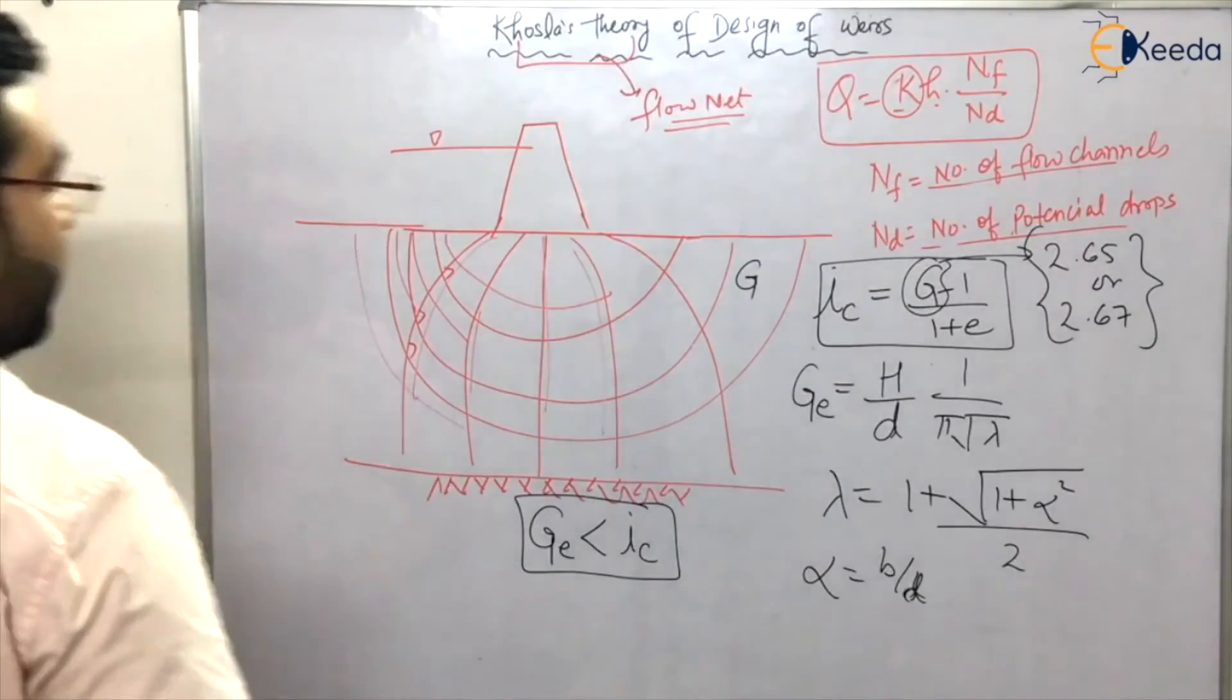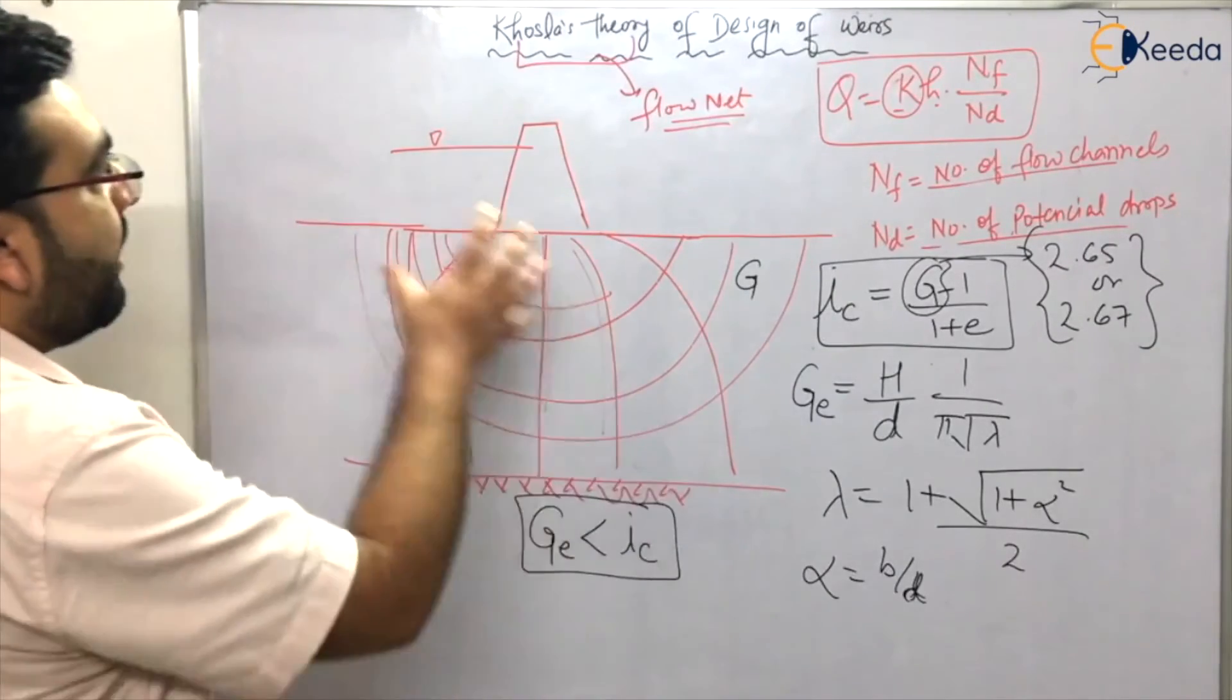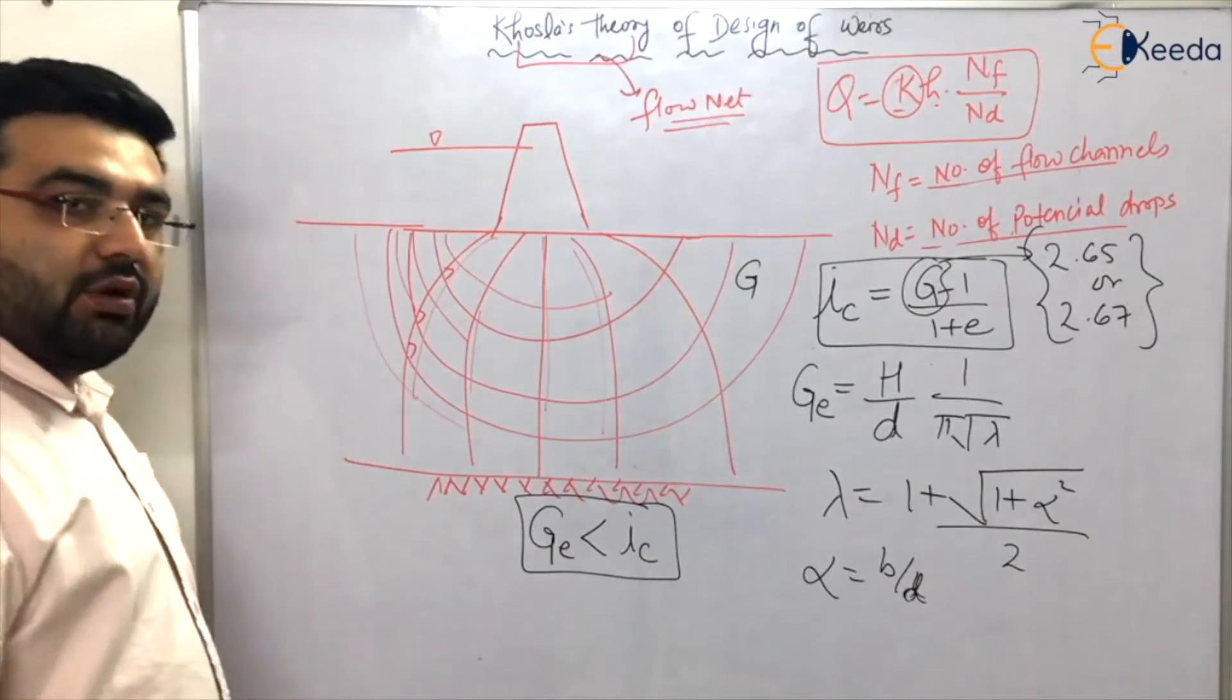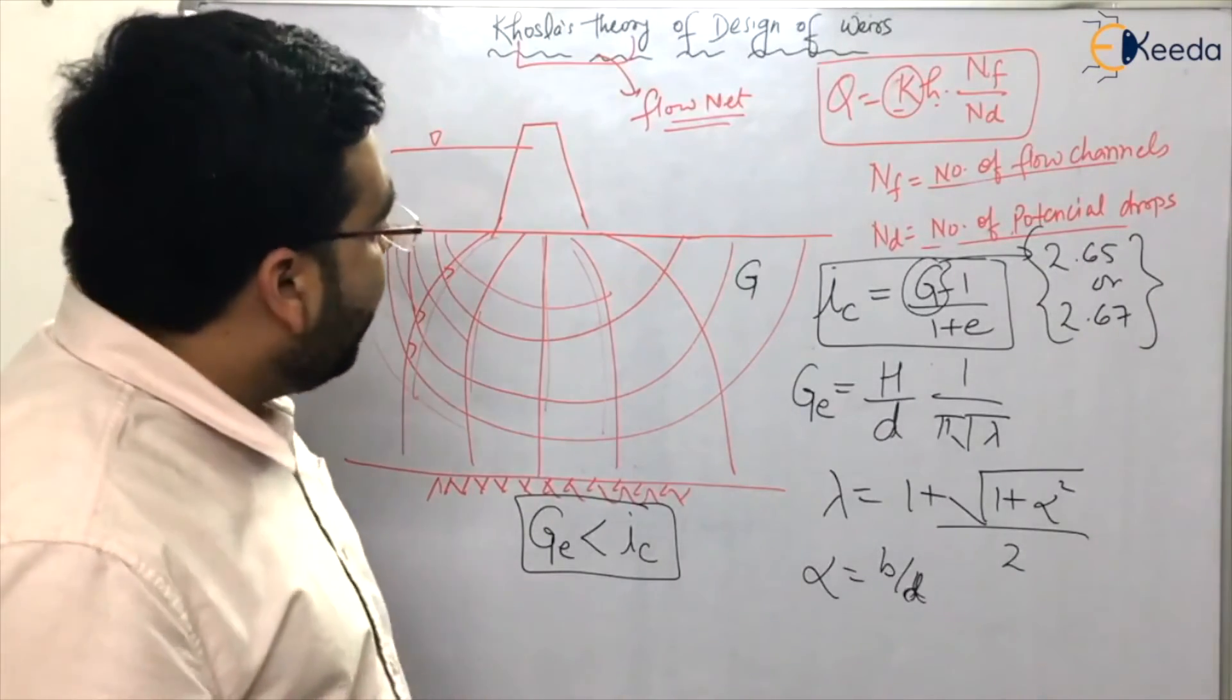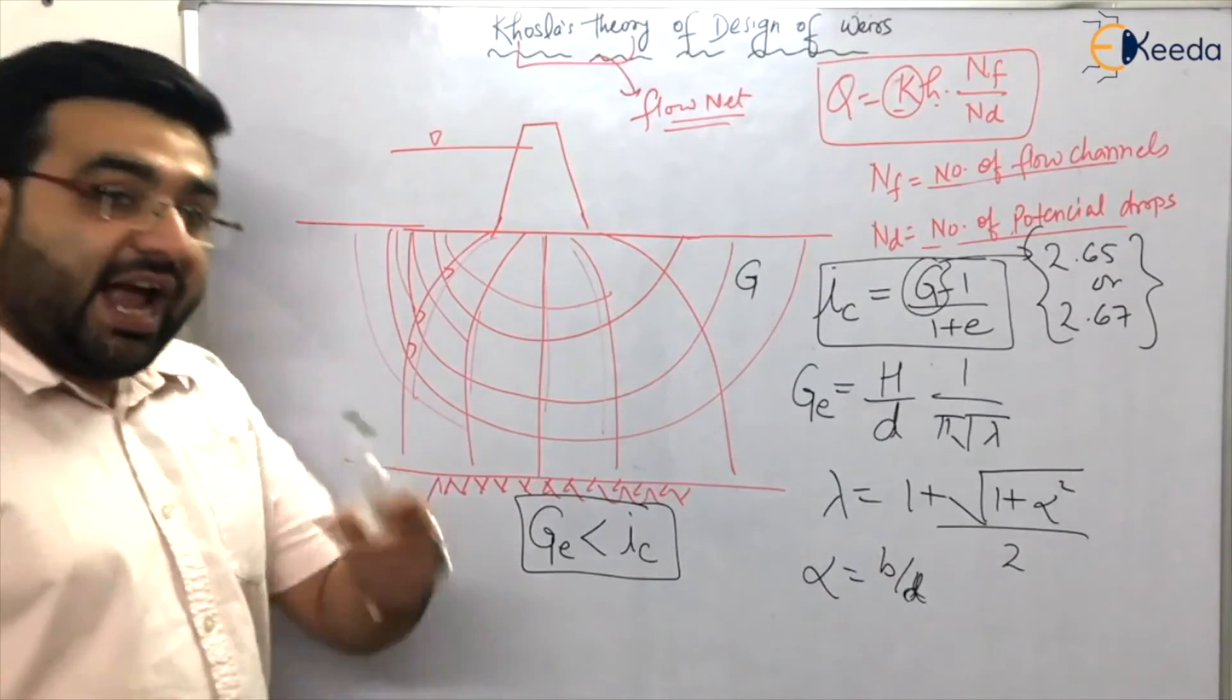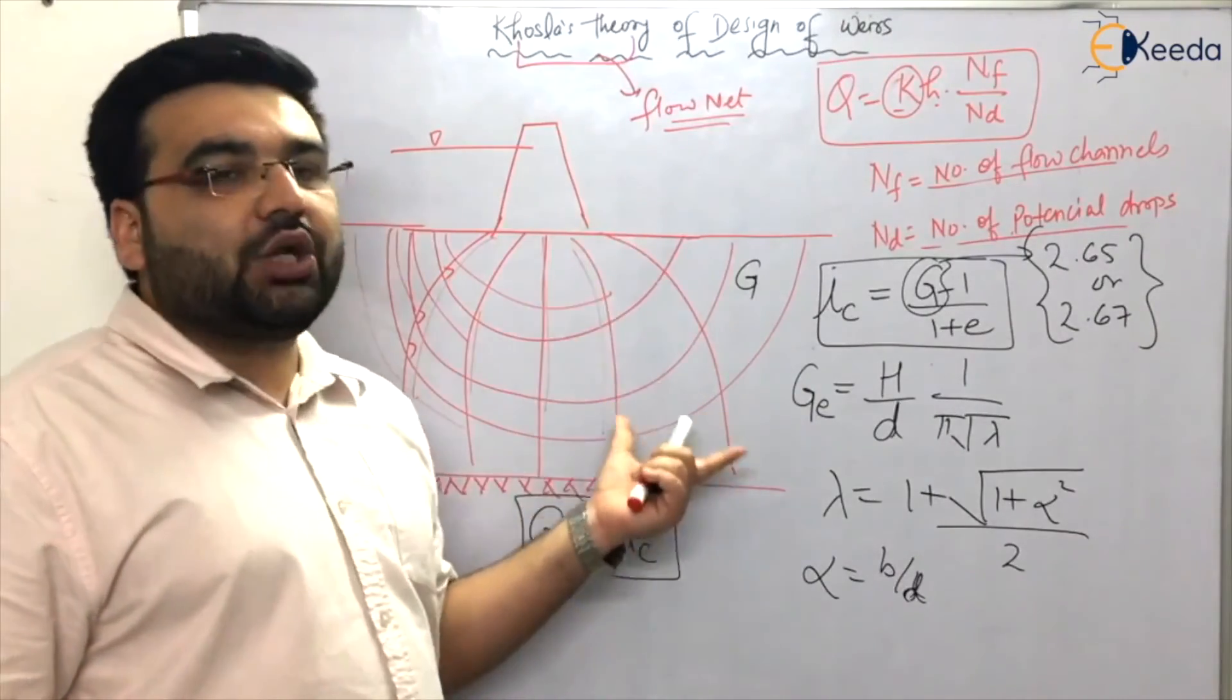So I hope you've got it right. Now let's solve a numerical on the basis of Khosla's theory of design of weirs. One more important thing - if you remember, I told you that Khosla's theory is actually used for RCC or concrete weirs.